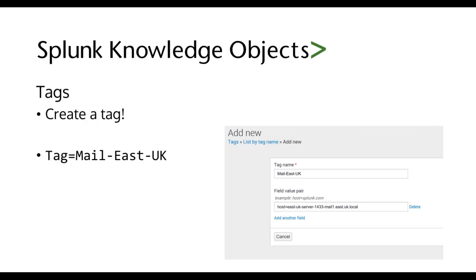The tag name can be really whatever you want — in this case, mail-east-uk. Now all people have to do to search with this server is type tag equals mail-east-uk.